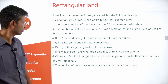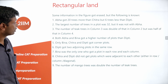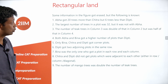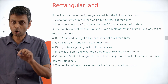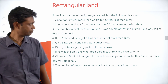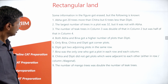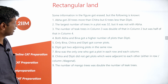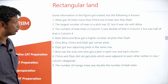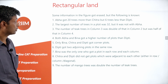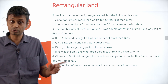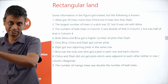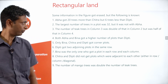The largest number of trees in any plot was 32, but it was not with Ava. The number of teak trees in column 3 was double that in column 2, but was half that in column 4. This is useful because it links three cells with variables.